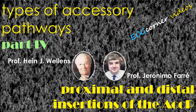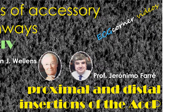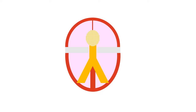In this video, we explain the different types of accessory pathways according to the location of their proximal and distal insertions. The location of the proximal and distal insertions of the accessory pathway enables us to differentiate four types of tracts, bypassing totally or partially the normal atrioventricular bundle.